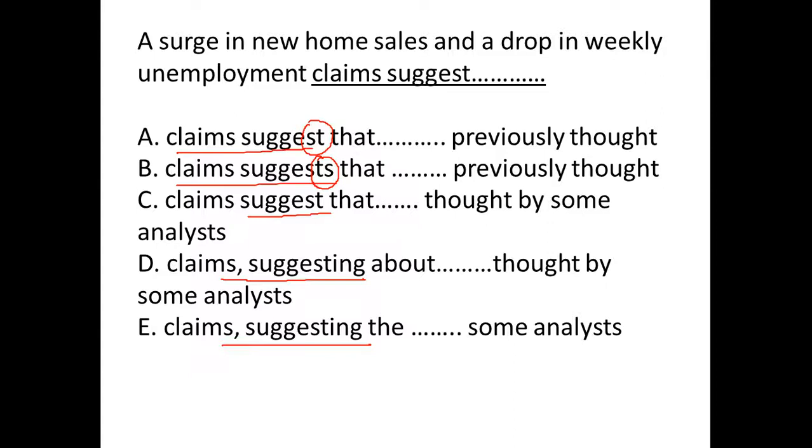Go back to the main sentence. It is a surge in new home sales and a drop in weekly unemployment claims. So, till claims, we have a subject and when we join two nouns with the help of and that makes the subject plural. That means we need suggest. So, eliminate B.